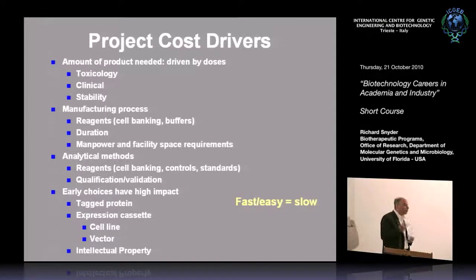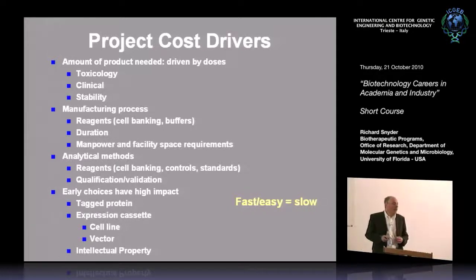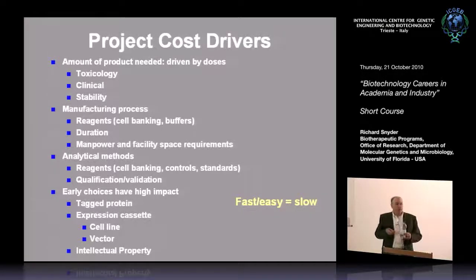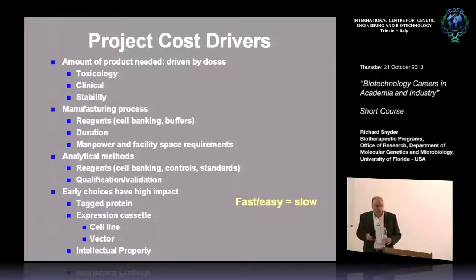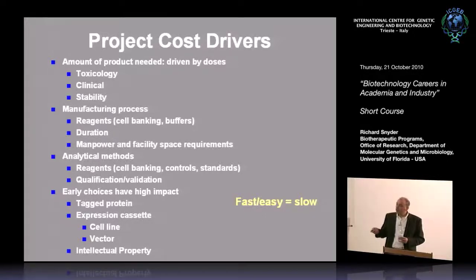What I mean by fast and easy equaling slow: in a research lab, if you want to test a protein in an animal model and you histag it, purify it on a nickel column — it's fast and easy. Then you cure the animal and think you're ready for the clinic. But you're not — you have to go back, re-engineer, get rid of the histag because it's immunogenic, and develop a purification process relying on classical chromatographic steps that doesn't rely on a nickel tag. Those early choices have a huge impact. Similarly, if you're using a weak promoter and Invitrogen has a new one giving ten times more protein, you probably want to switch. And intellectual property matters — some companies may allow you to use their IP, some may not.